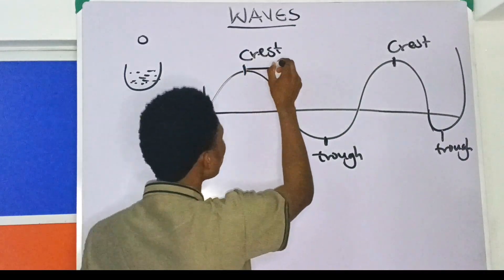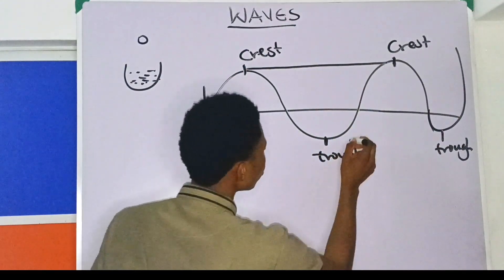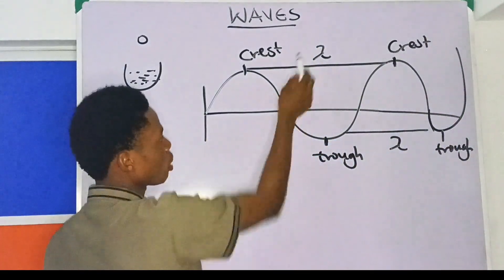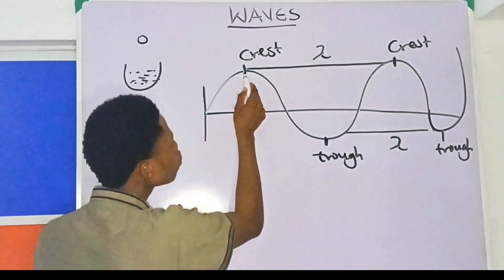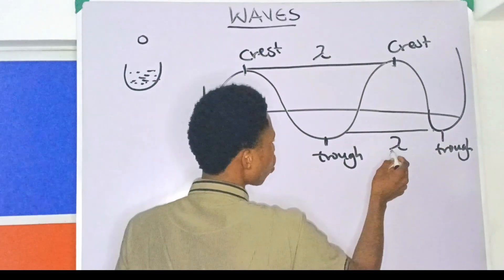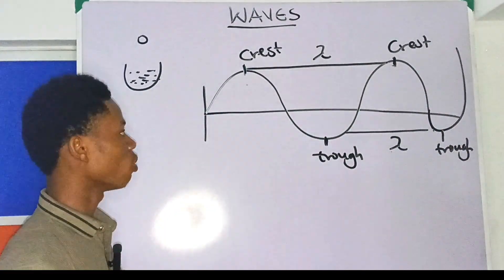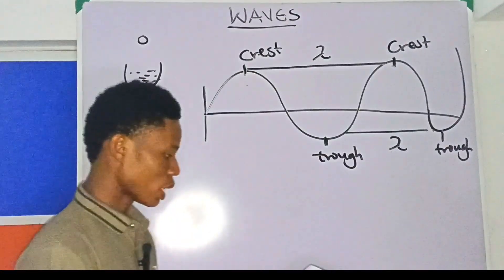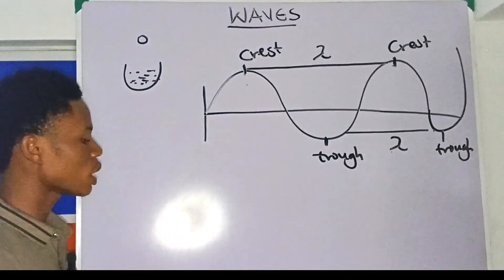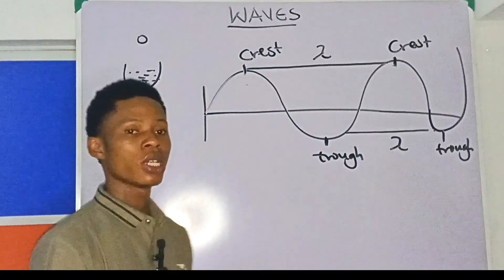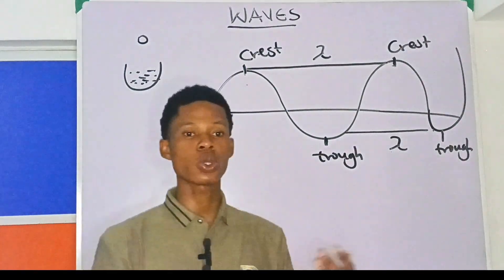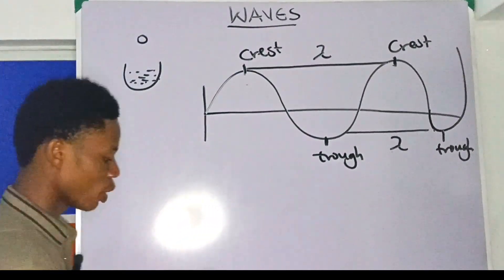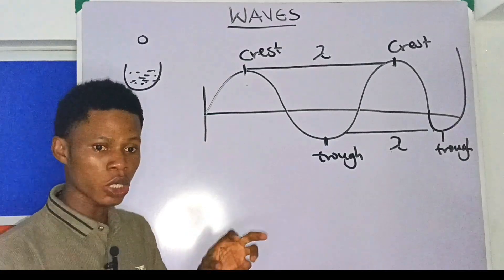The distance between two successive crests, or two successive troughs, is what we call wavelength. Wavelength is represented as lambda - this symbol here. So in objective exams, you will always see: the distance between two successive troughs or two successive crests is dash - and the answer is wavelength, which is lambda.